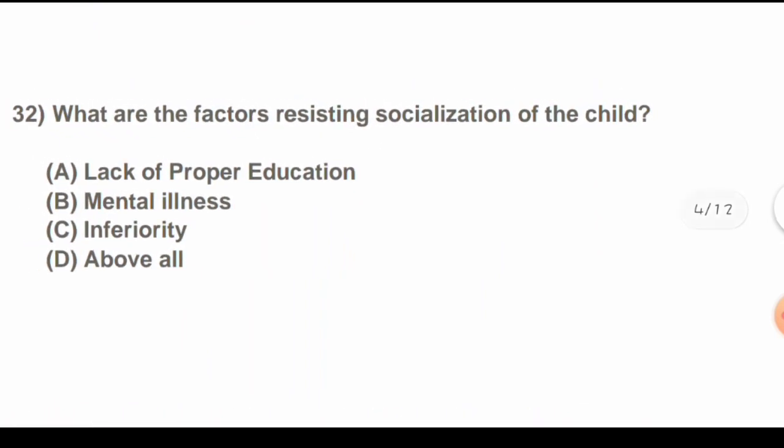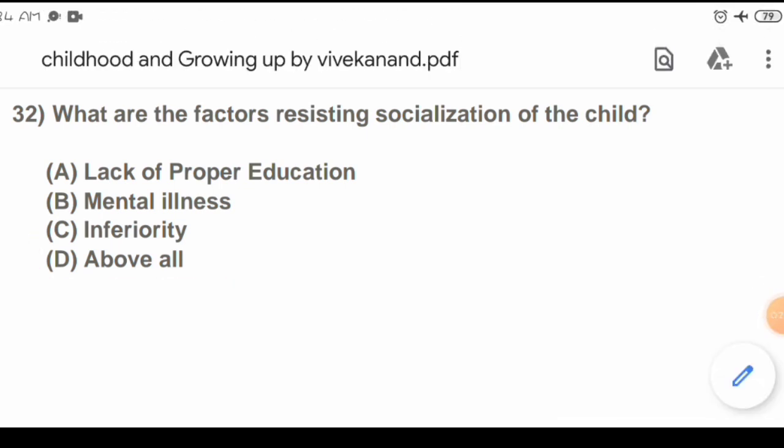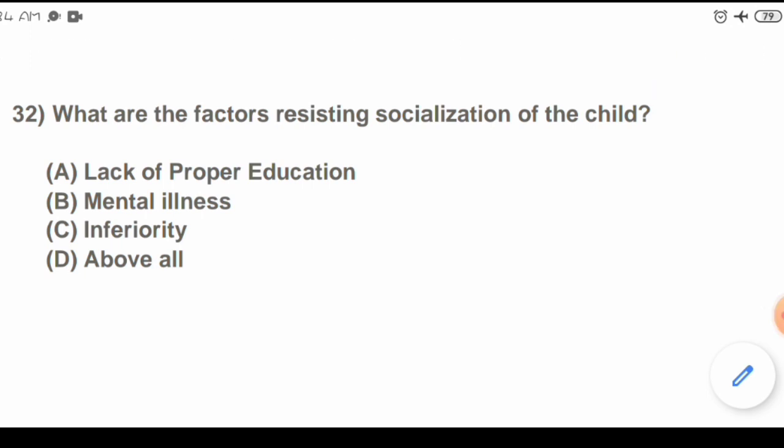Question 32: What are the factors resisting socialization of the child? Options are: A) Lack of proper education, B) Mental illness, C) Inferiority, D) All of the above. The correct answer is D) All of the above.